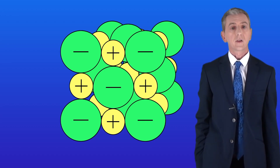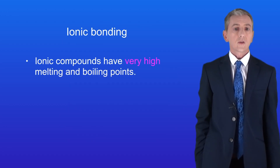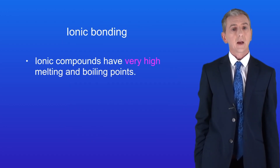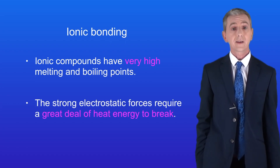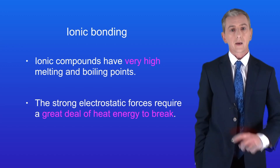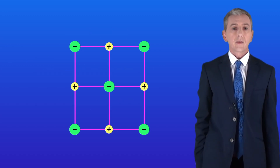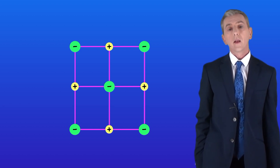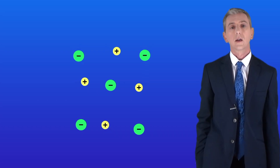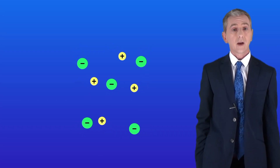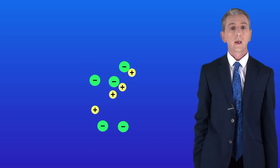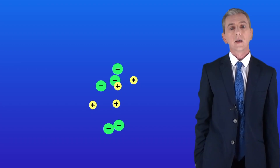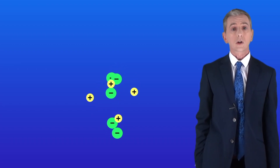There are two key properties of ionic compounds which we need to look at. The first is that ionic compounds have got very high melting and boiling points, because the strong electrostatic forces require a great deal of heat energy to break. As we heat the ionic solid, the particles vibrate. When the particles vibrate with enough energy, the electrostatic forces break and the solid melts. However, this requires very high temperatures because the electrostatic forces between the ions are very strong. A good example is sodium chloride, which has a melting point of around 800 degrees Celsius.